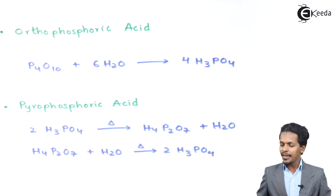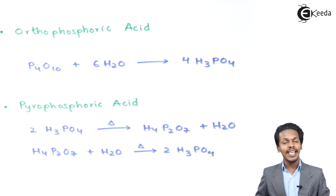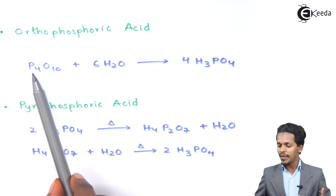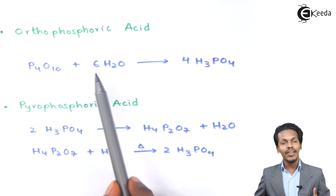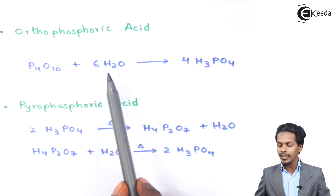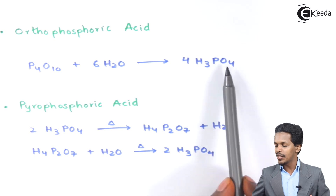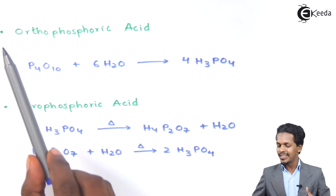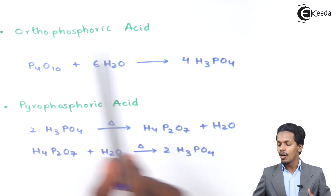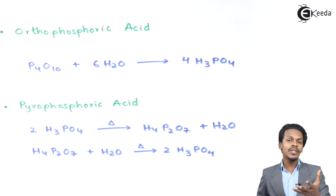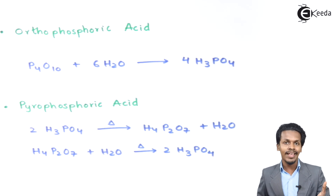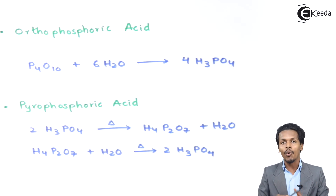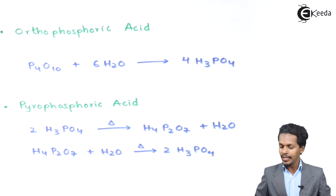The next is the preparation of Orthophosphoric Acid. We react P₄O₁₀ with water to get 4 moles of H₃PO₄, which is Phosphoric Acid — in this case known as Orthophosphoric Acid. The structure of Phosphoric Acid will be discussed in the next lecture.